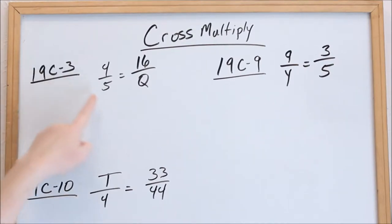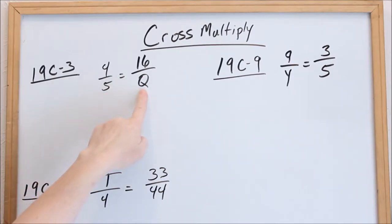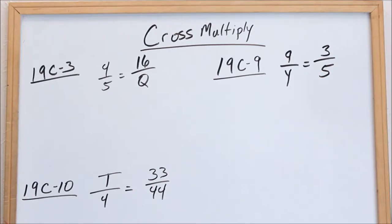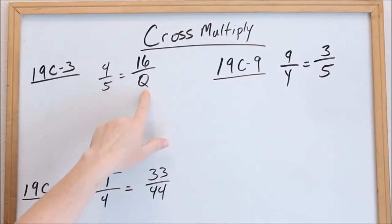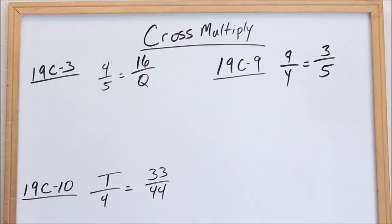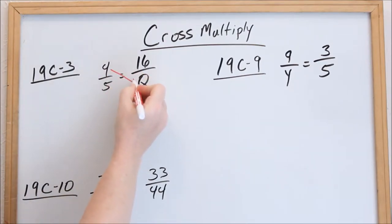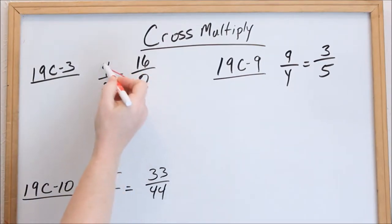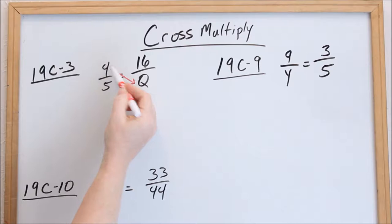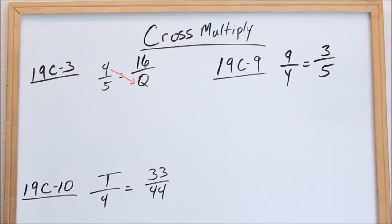Looking at 19c3, you have this fraction set equal to this fraction with one unknown. The only time you can use cross multiplication is when you have one fraction equal to one fraction — that's the only time. Here is why we call it cross multiplication: you take this numerator times that denominator and you write it on one side of the equal sign.